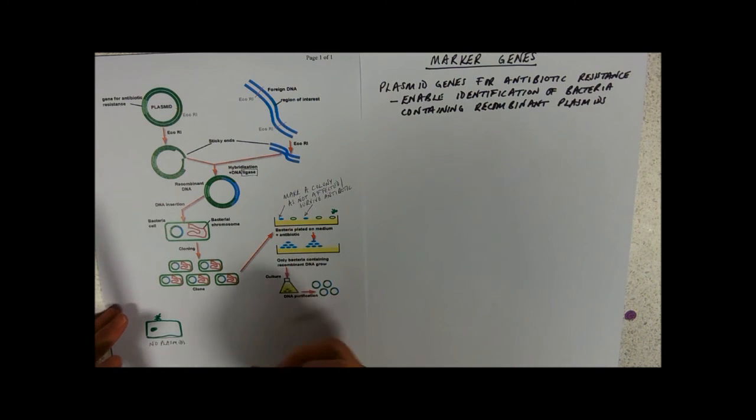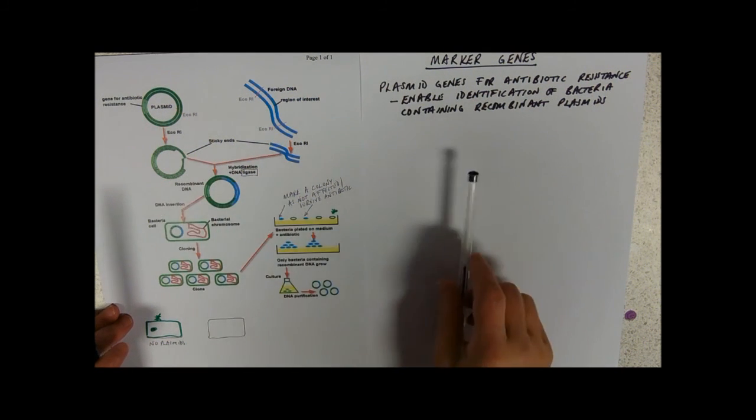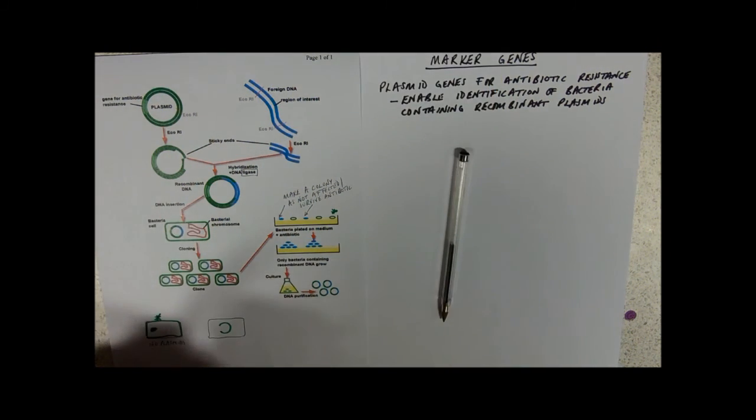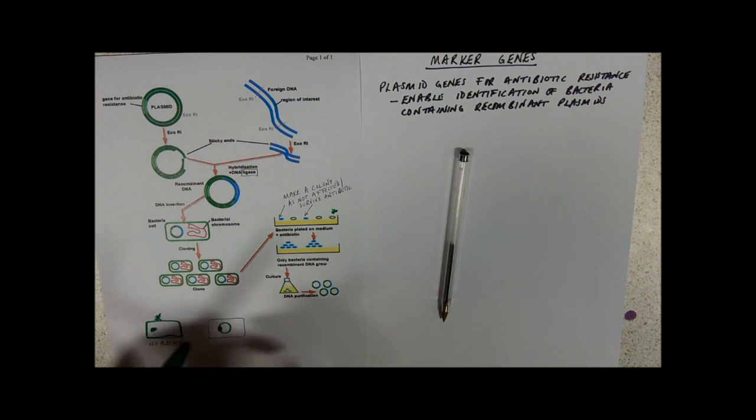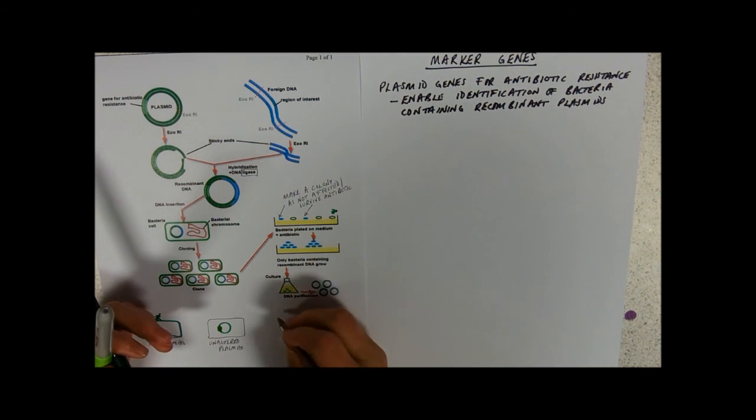Then you get ones that have plasmids, but at this cutting stage, when you add the ligase in, they've just joined back up together. And so these are bacteria that have plasmids, but they've just been joined back together. So they've still got antibiotic resistance. And then you've got the ones that you really want. So these have unaltered plasmids in them.